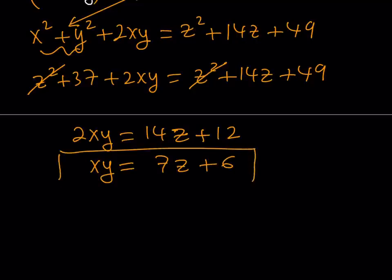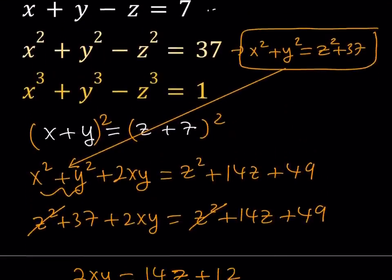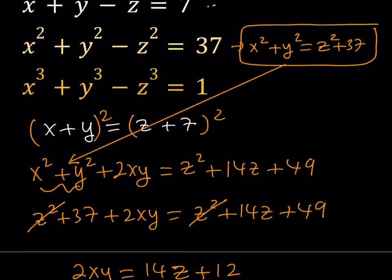So now, I got xy in terms of z. Why do I need xy? Because notice that I have the sum of squares, I have the sum of cubes. I'm going to need the product xy. Sort of like a Vieta way. So now, let's work with the third equation.